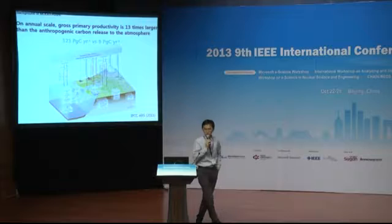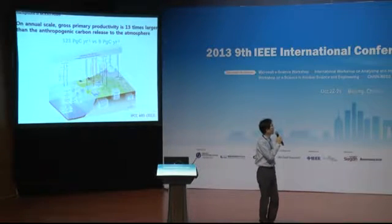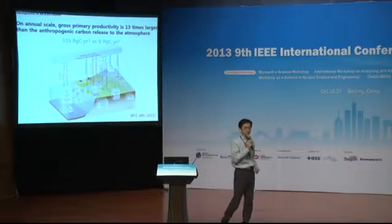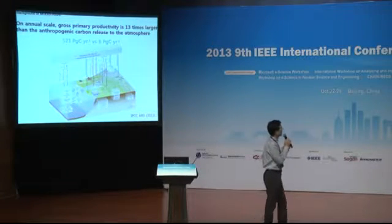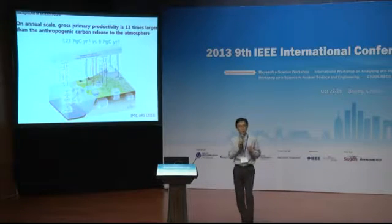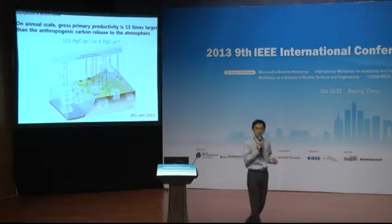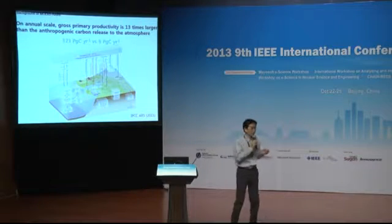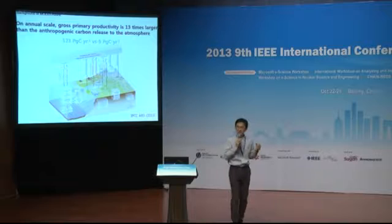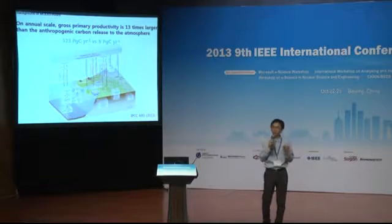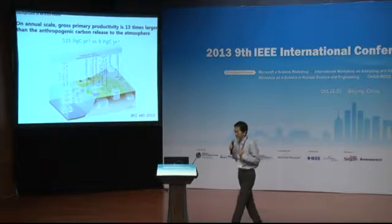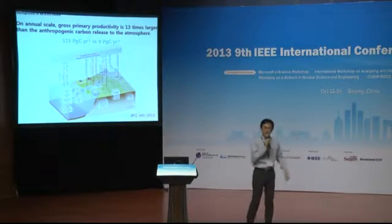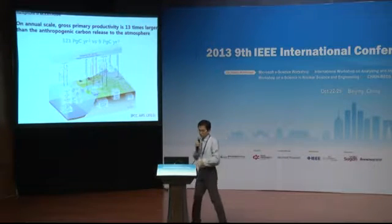Why is GPP so important? According to the IPCC AR5 report, on an annual scale, gross primary productivity is 13 times greater than the annual release of anthropogenic CO2. The global land ecosystems absorb 123 petagram of carbon, compared to roughly 10 petagram per year released by humans. But there is lots of uncertainty — the range is from 113 to 170 petagrams — much bigger than the CO2 released by humans.